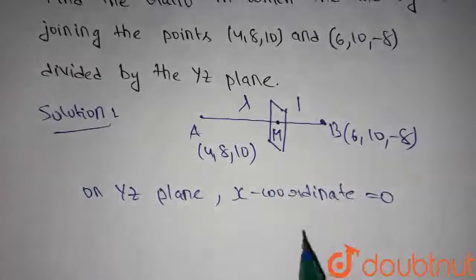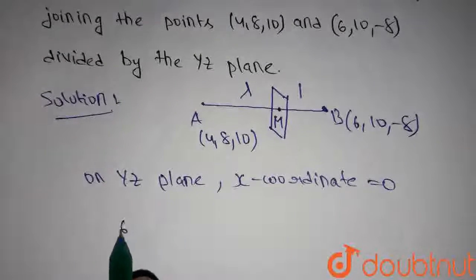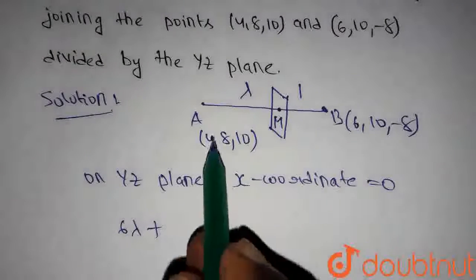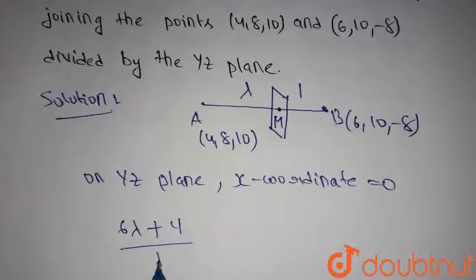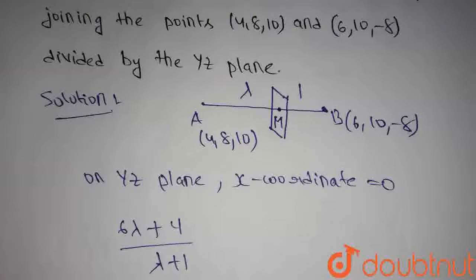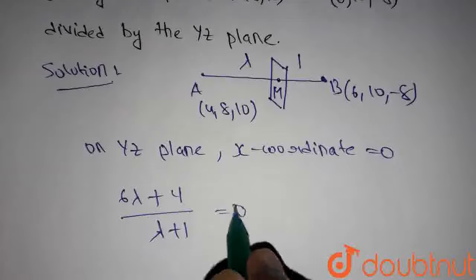the x coordinate of point M is given by lambda into 6 plus 1 into 4 divided by lambda plus 1. We have to equate this equals to 0.